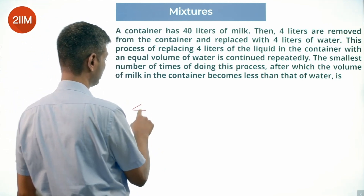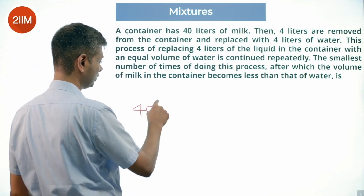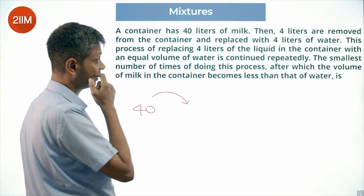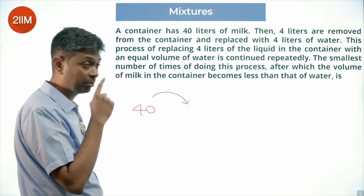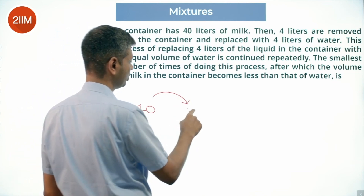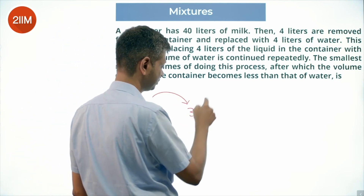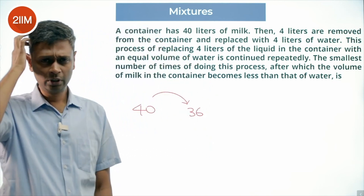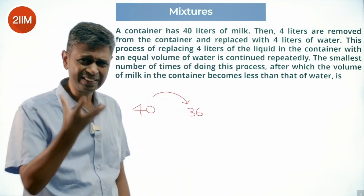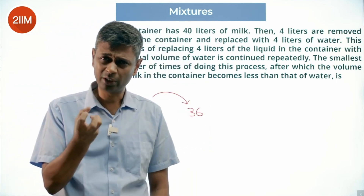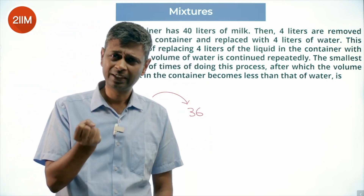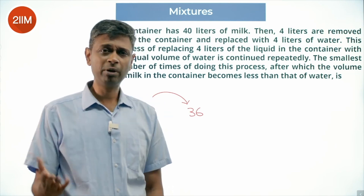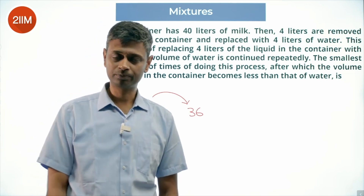First it has 40 liters of milk. Then I remove 4 liters and replace with water, so it has 36 liters of milk. What am I doing? I am removing 10 percent of this liquid — 90 percent is retained and I am replacing it with water.